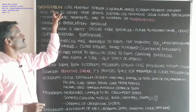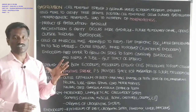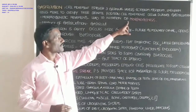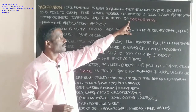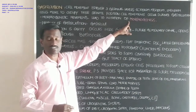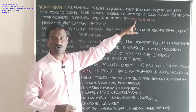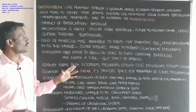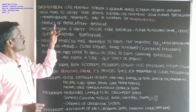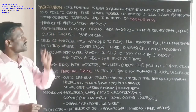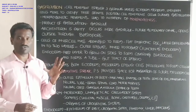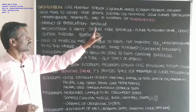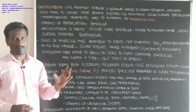During gastrulation, morphogenesis occurs. One product is formed after gastrulation — that is called the gastrula. The embryonic disc undergoes gastrulation to produce the gastrula.